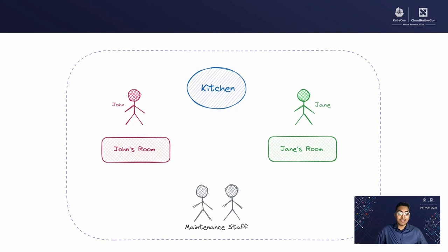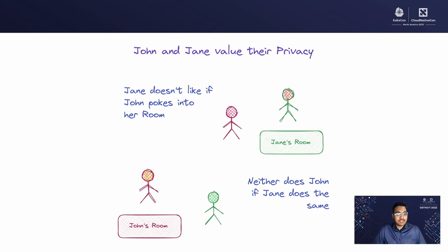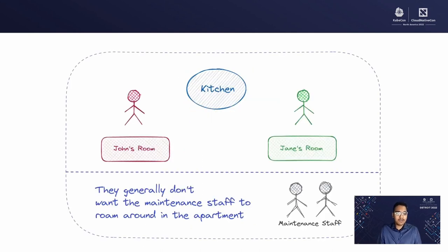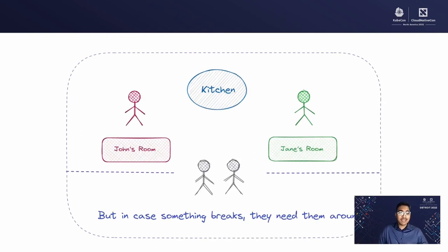A private apartment with John and Jane, each having their own rooms. They have a kitchen and some maintenance staff around. John and Jane value their privacy — Jane doesn't like if John pokes into her room, neither does John if Jane does the same. But they both do like to hang around in the kitchen for functioning. They generally don't want the maintenance staff to roam around in the apartment, but in case something breaks — like the shower, gas, or an electrical appliance — they need the maintenance staff around.